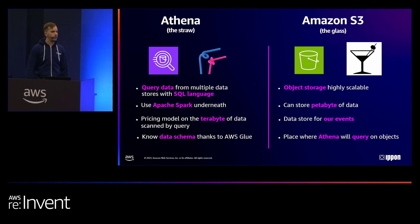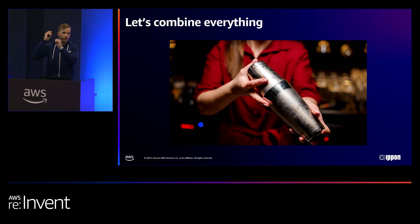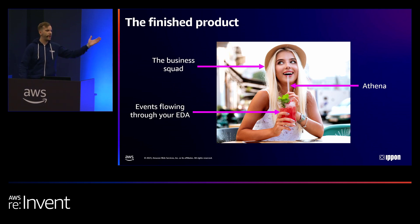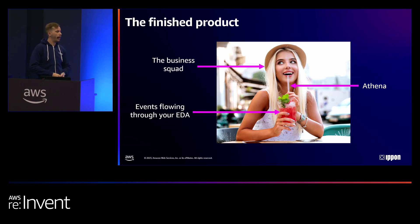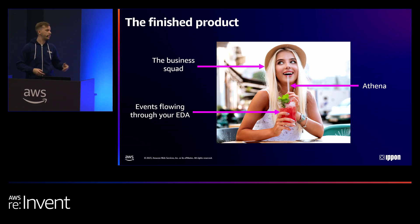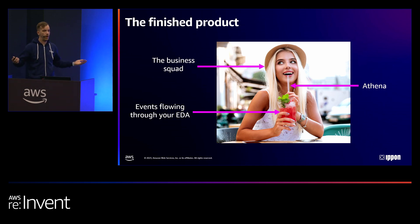With the combination of everything, the nice thing is we can now shake everything and we have a result. This result is the slide I started my talk with — the business squad. The business squad is now really happy because they have a straw, which is Athena, to sip their cocktail slash mocktail. They don't know they're actually drinking a cocktail made of events flowing through your event-driven architecture. They can now start building dashboards — you can put AWS QuickSight to build dashboards with this kind of architecture.